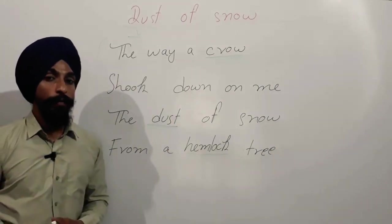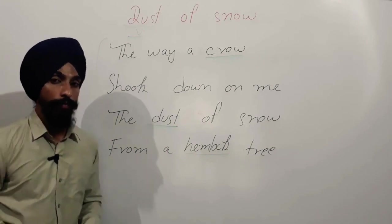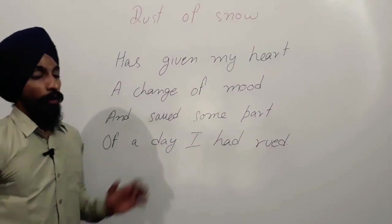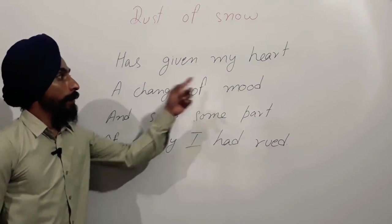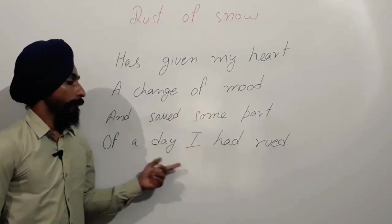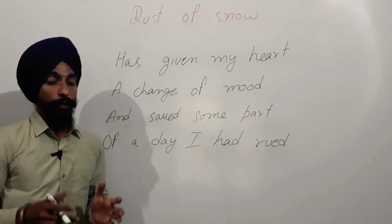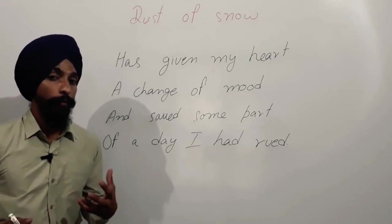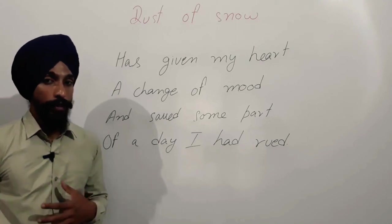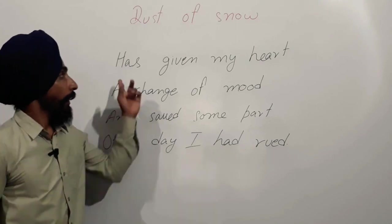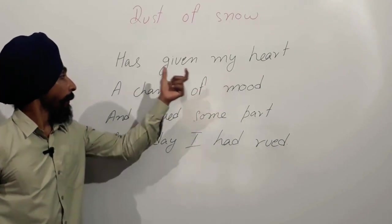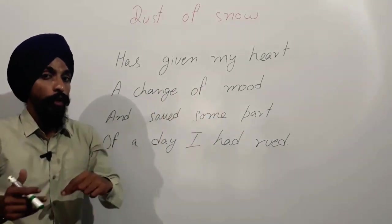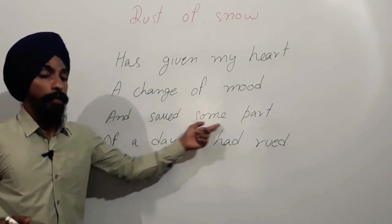Now we will discuss the next four lines. The poem says: 'Has given my heart a change of mood and saved some part of the day I had rued.' The dust of snow falling on the poet changes his mood. His heart has changed — the mood has shifted because of the particles of snow.